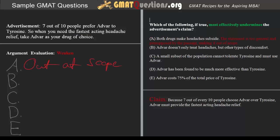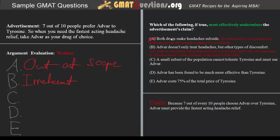So A is incorrect because this statement is too general and presupposed by the passage, making it out of scope. Answer B: Advar doesn't only treat headaches, but other types of discomfort. Because the logic in the passage refers specifically to headaches, and we have no further information on other types of discomfort or pain, any other types of pain are completely irrelevant to the line of argumentation. B is incorrect since it does not bear on the logic of the claim.